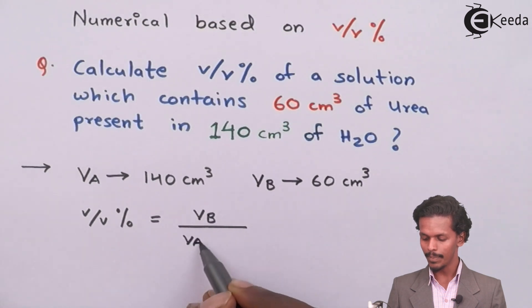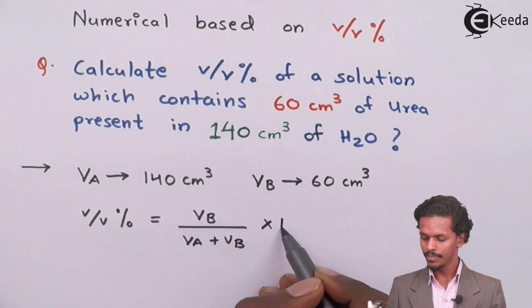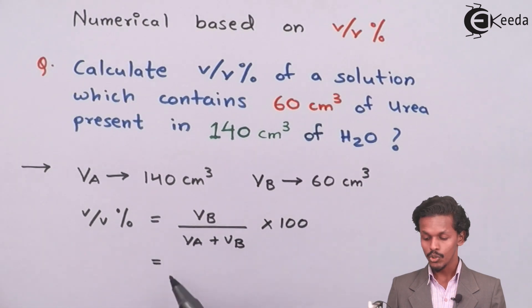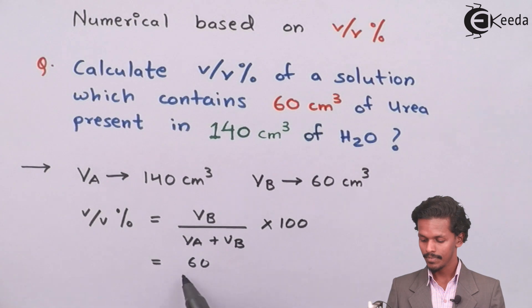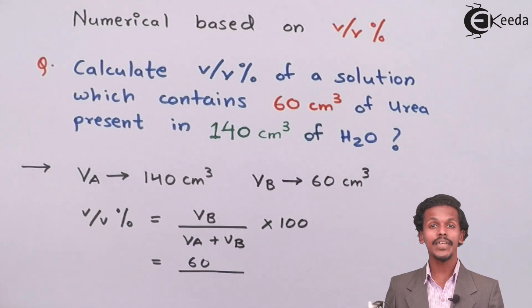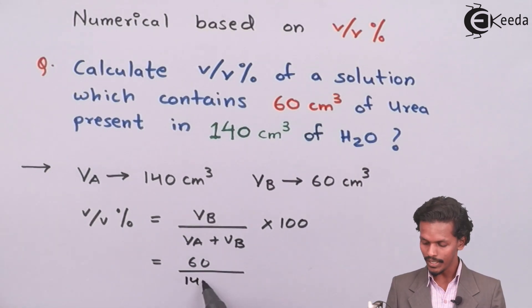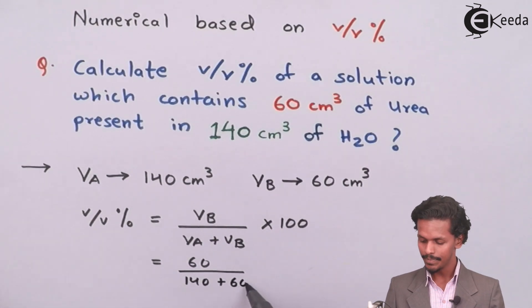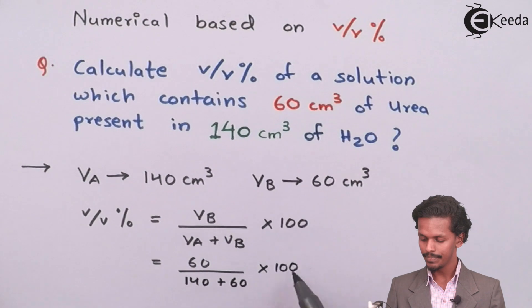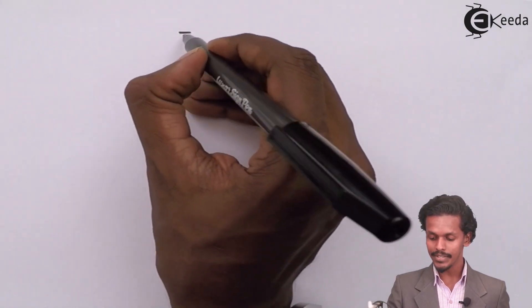So VB is 60 cm³ and VA is 140. Then again VB is 60 times 100. This gives us 60 divided by 200 times 100.